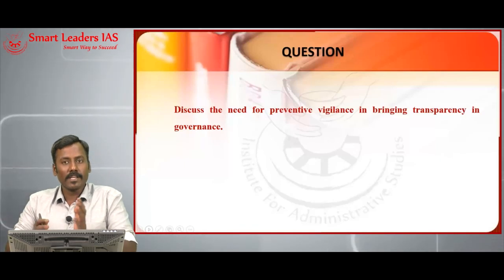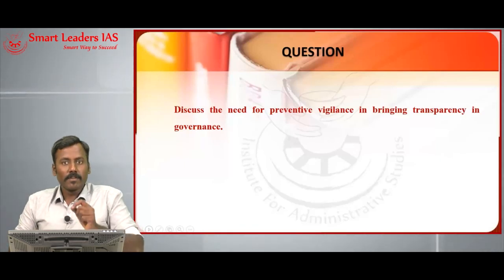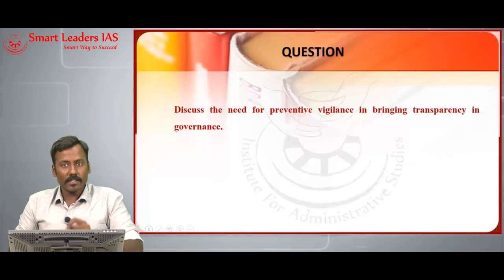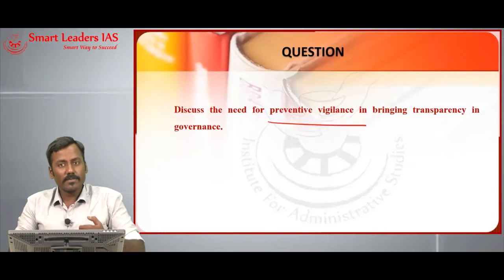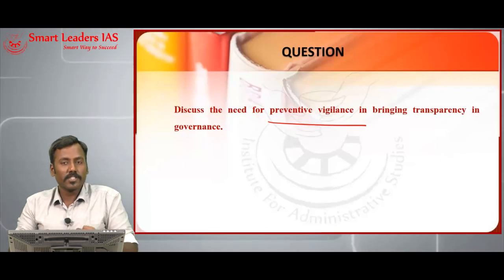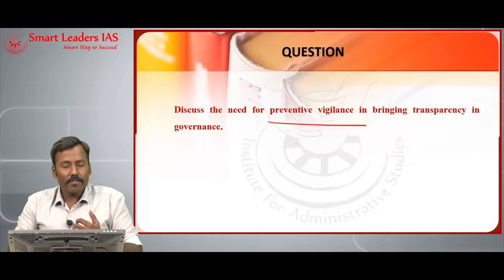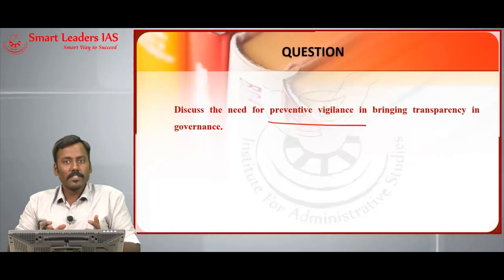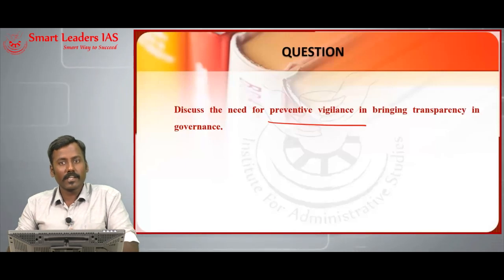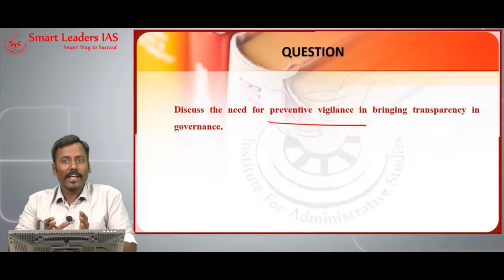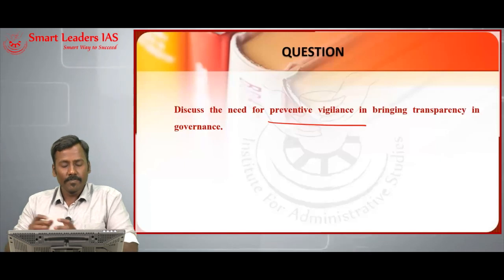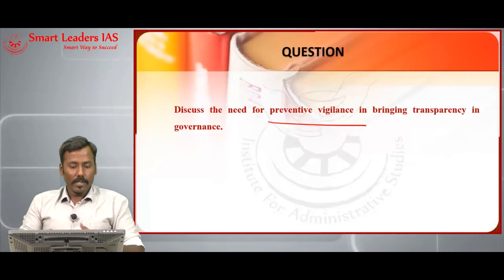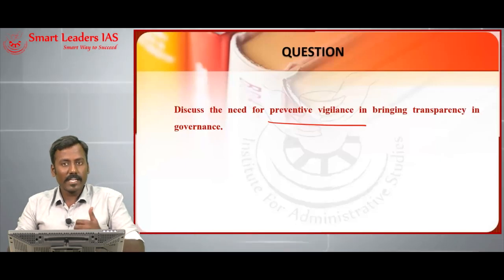Mitigation is more important than management — we need a pre-exercise. Mitigation is provided by preventive vigilance. Preventive vigilance gains importance considering that India stands at position 81 in Transparency International's Corruption Perception Index. With India being touted as the world's fastest growing economy, these negative marks pull down growth. The elephant will never rise if corruption is not curtailed. The question asks: Discuss the need for preventive vigilance in bringing transparency in governance.